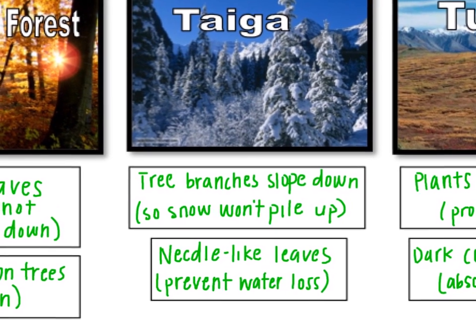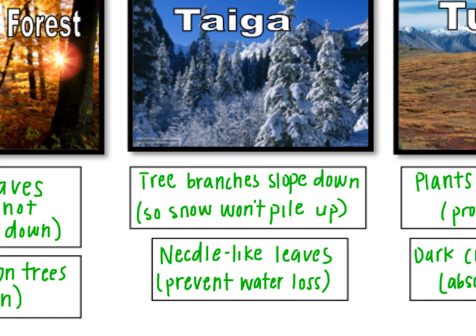The next environment is the taiga, an area that is very, very cold, usually in mountain ranges — think of a lot of snow. In this area, you're going to see a lot of Christmas tree-like plants where the branches slope downward, forming a triangular shape. That's so that snow will just fall off the branches and doesn't really accumulate, which also protects those branches from breaking and allows them to survive heavy snow.